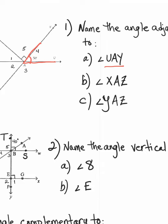There are actually two angles I could name as adjacent to angle UAY. I can say angle three, because they share side AU, or I could also say angle five, because they share side AY. So either one of those would be correct.